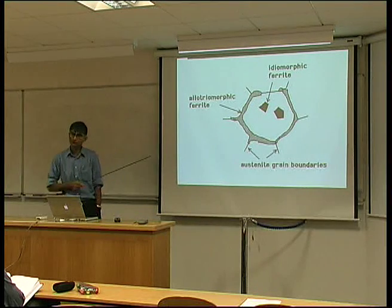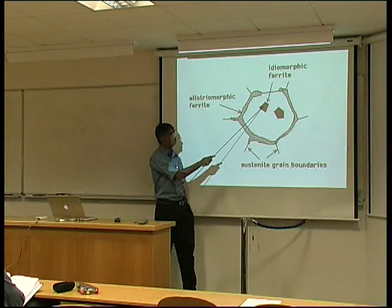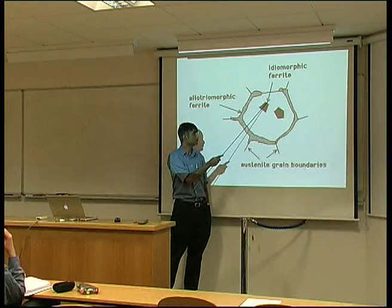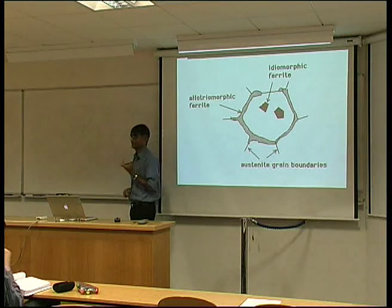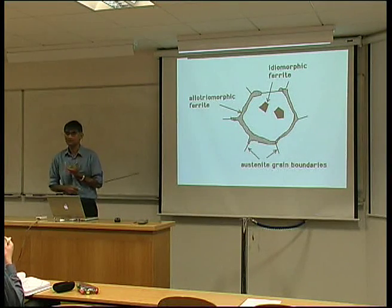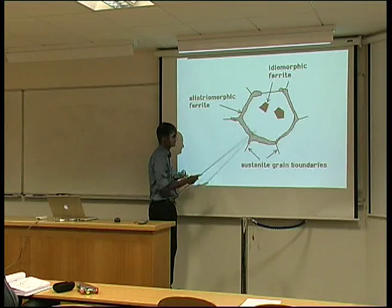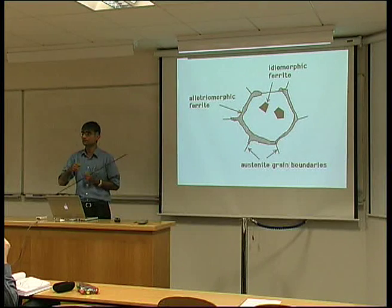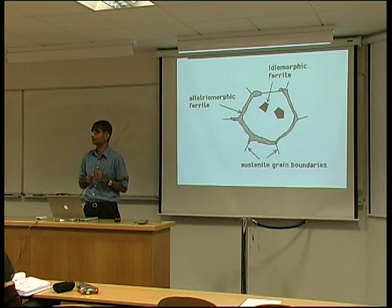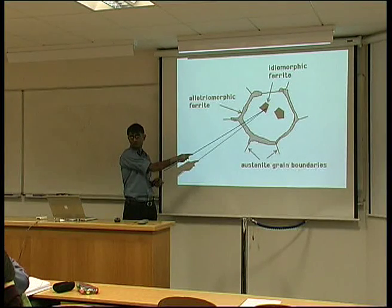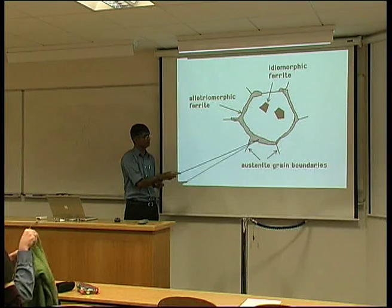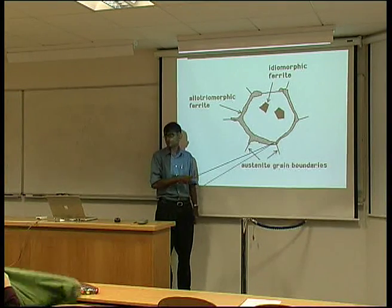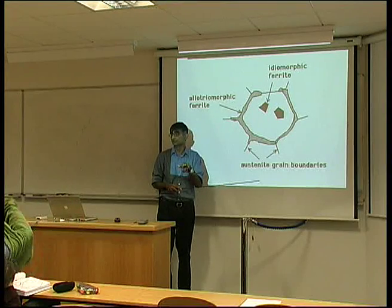By contrast, if you nucleate the ferrite inside the grain — perhaps on a non-metallic inclusion present in the steel — we call it idiomorphic ferrite, because it has some aspect of the crystallography of the ferrite. You can see these crystallographic facets, and these grains tend to be more equiaxed, meaning roughly the same dimensions in all directions. From a mechanical property point of view, this is a good microstructure because there is no microstructure inside these regions and therefore cracks are difficult to deflect.